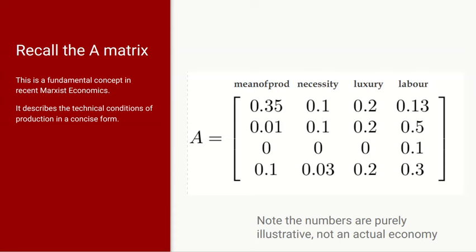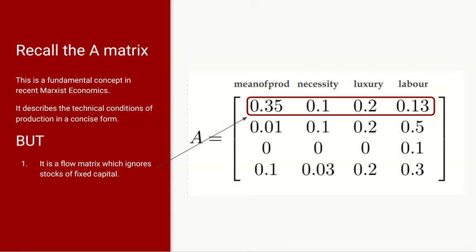Remember the A matrix I introduced last video. It's a technical description of the technical structure of the economy that's widely used in formal Marxist economics. It does however have certain weaknesses. It's a flow matrix — that is to say it measures the quantity of a given input that is used each year or each time period. Therefore it's the flow in and the flow out that is measured by the A matrix. As such it ignores stocks of fixed capital, only shows the flow of means of production, not the ones which are there and persist from time period to time period.